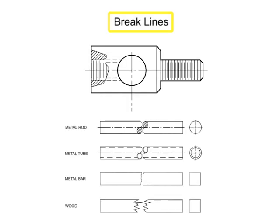Brake lines are used when a portion of the piece shows no useful information and removing it is either convenient to save space or will allow further details to be illustrated.